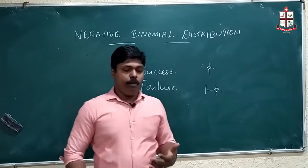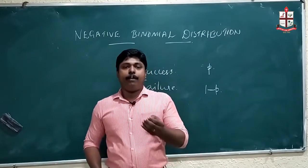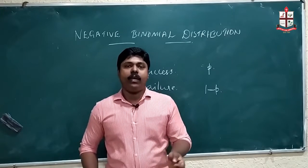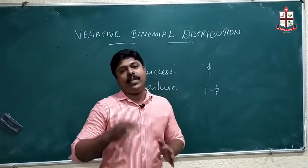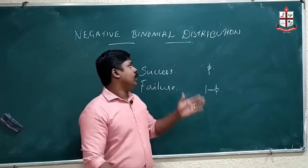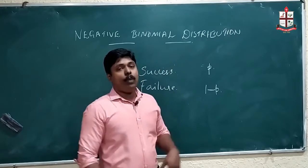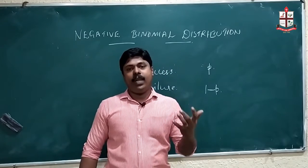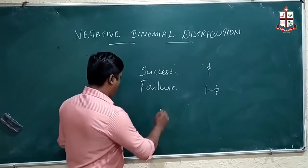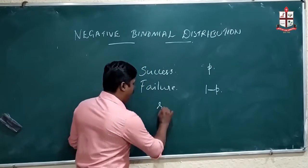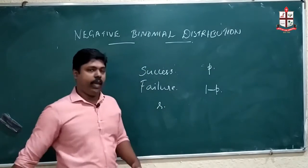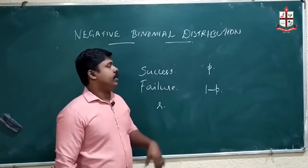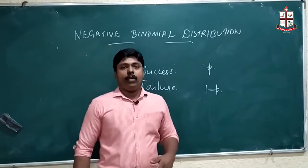In binomial distribution, the number of successes is a variable. In negative binomial distribution, the number of successes is a given number — it is fixed. For example, some r. R is the number of successes in negative binomial distribution.